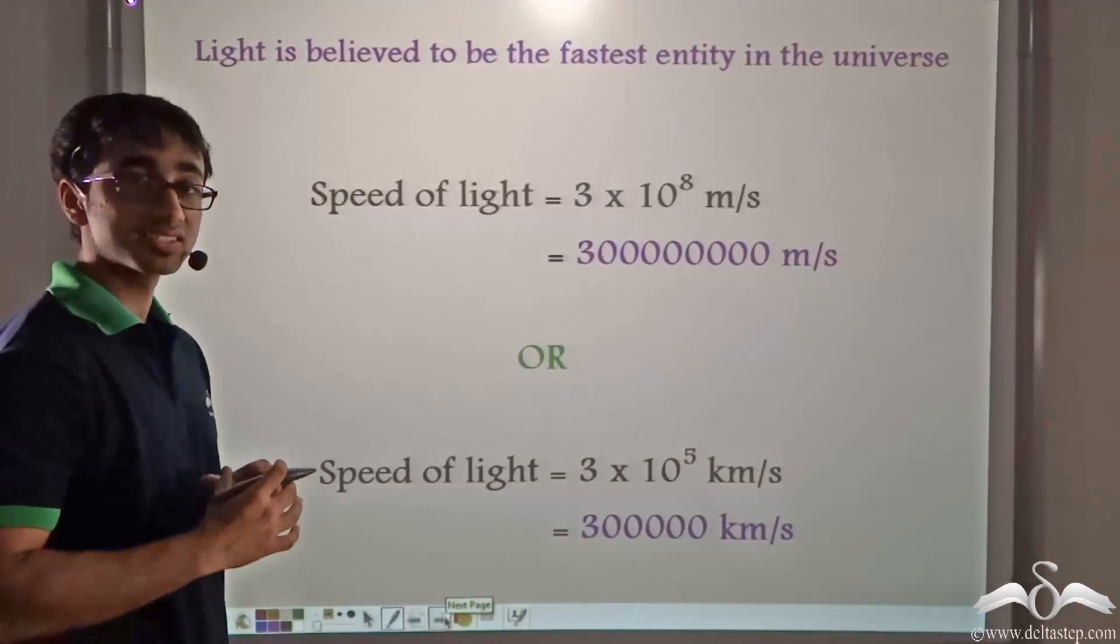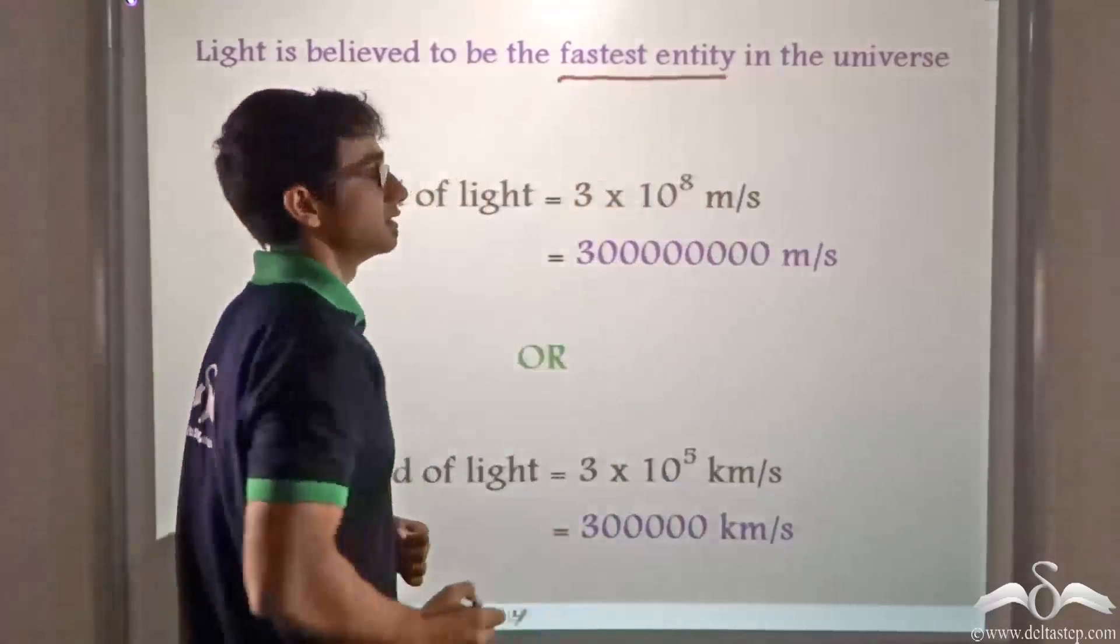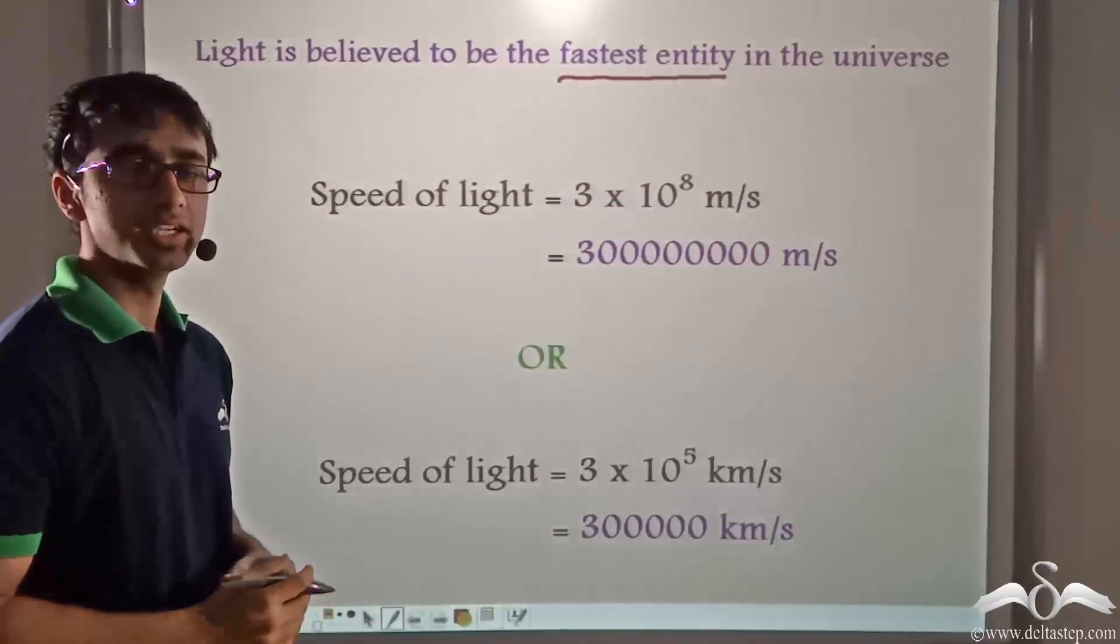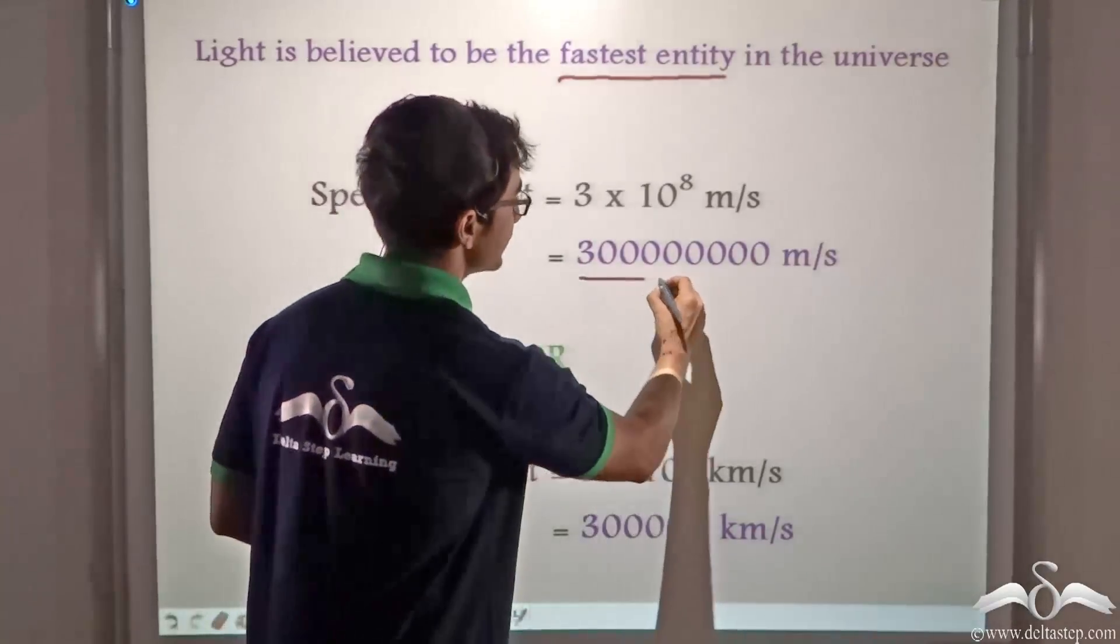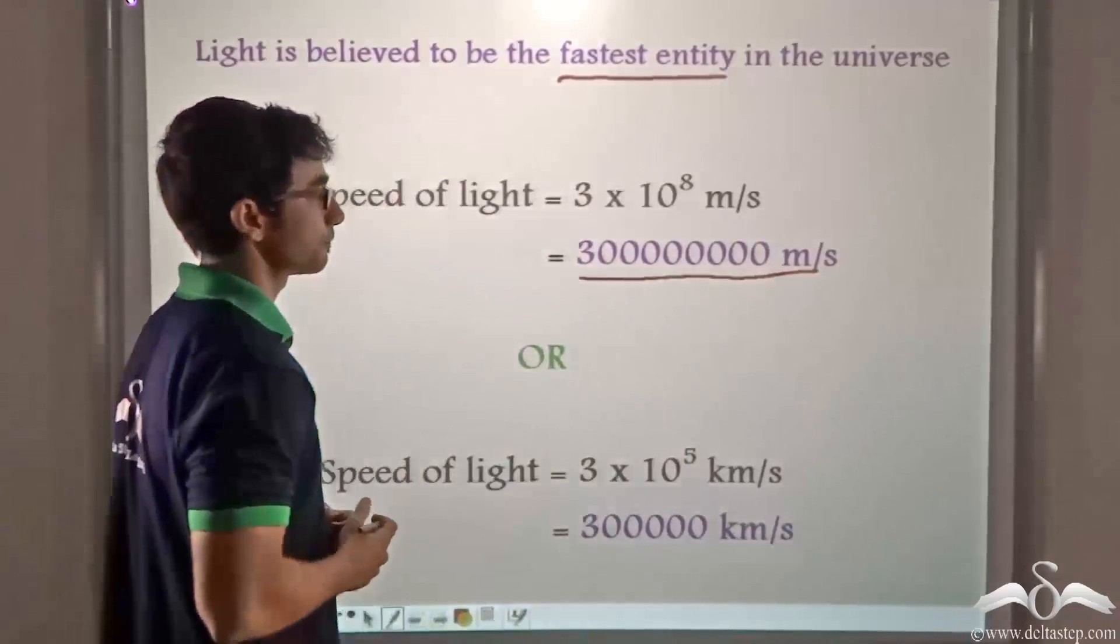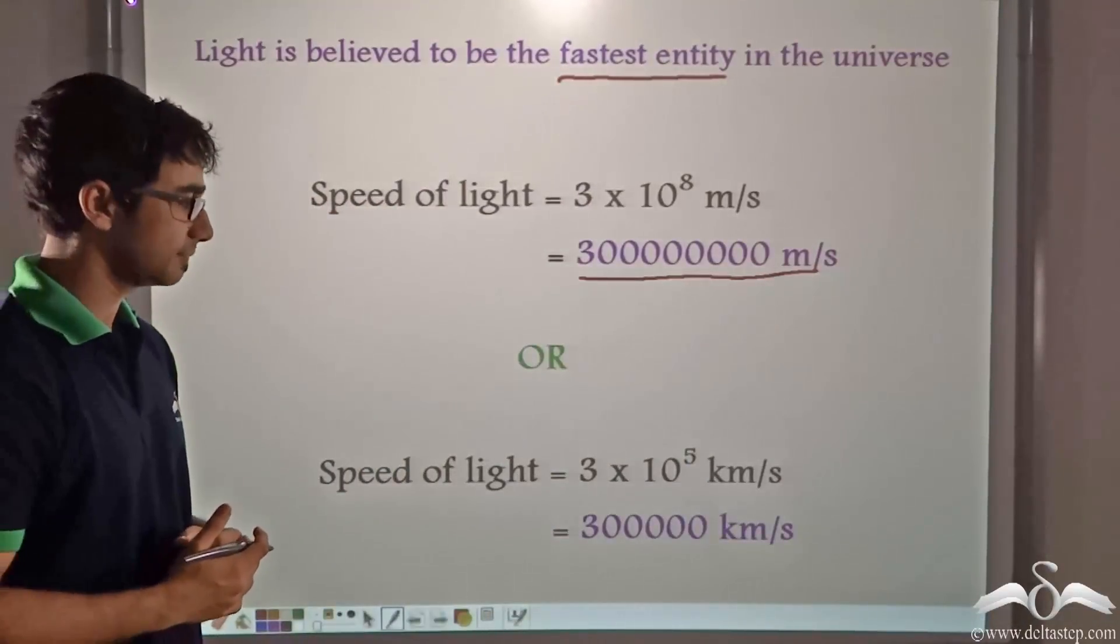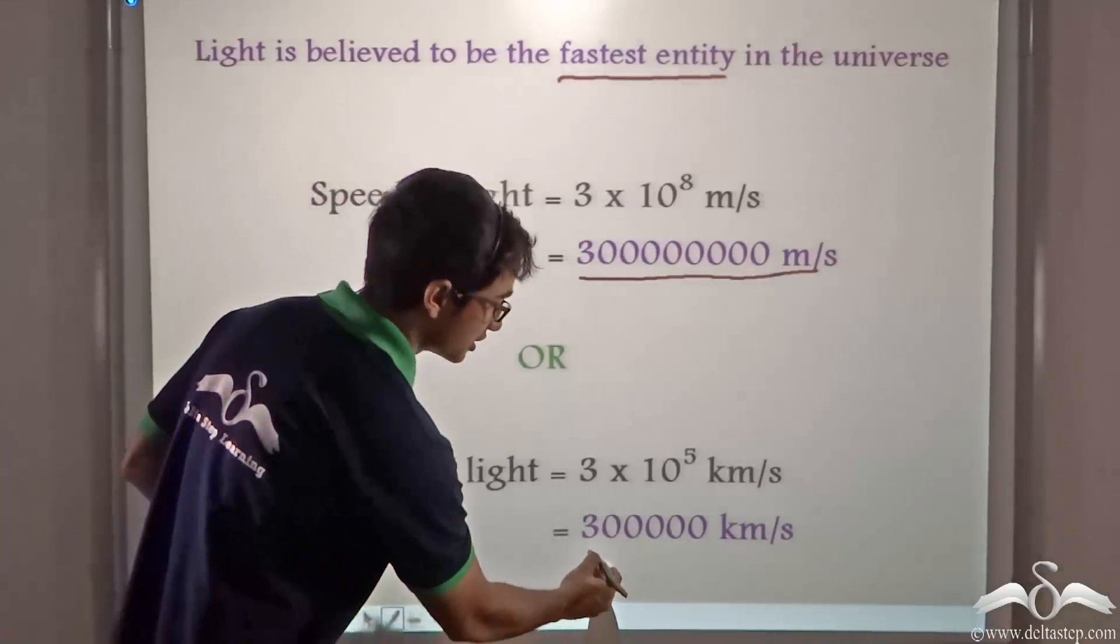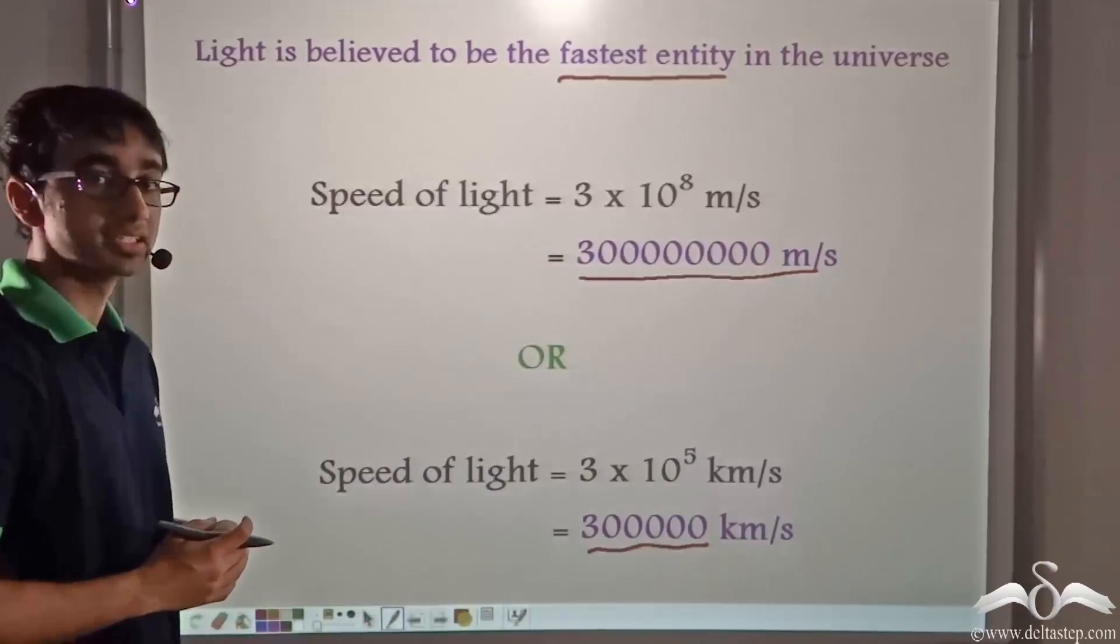Light is the fastest entity in the universe. The speed of light is 3 × 10^8 meters per second, or 30 crores meters per second. If we express the speed of light in kilometers per second, it is 3 × 10^5, or 3 lakh kilometers per second.